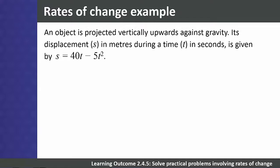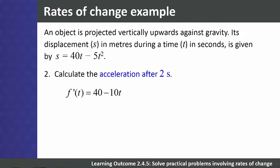Question 2: calculate the acceleration after 2 seconds. To find acceleration we need the second derivative of displacement with respect to time. Differentiating f'(t) = 40 - 10t again gives a second derivative of -10. Therefore the acceleration after 2 seconds is -10 meters per second squared.